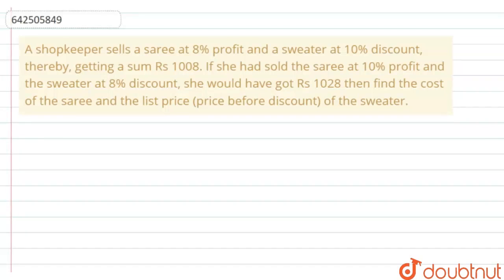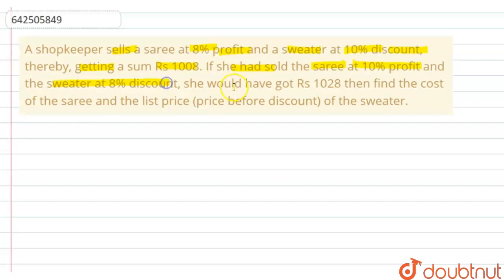The question says that a shopkeeper sells a saree at eight percent profit and a sweater at ten percent discount, thereby getting a sum of rupees 1008. If she had sold the saree at ten percent profit and the sweater at eight percent discount, she would get rupees 1028. Find the cost of the saree and the list price (price before discount) of the sweater.